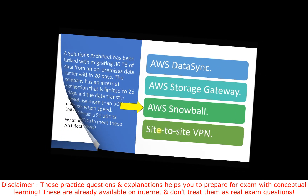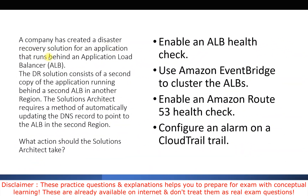The third question: a company has created a disaster recovery solution for an application running behind an Application Load Balancer. The DR solution consists of a second copy of the application running behind a second ALB in another region. The solutions architect requires a method to automatically update the DNS record to point to the ALB in the second region. The options are: enable an ALB health check, use Amazon EventBridge to cluster the ALBs, enable an Amazon Route 53 health check, or configure an alarm on a CloudTrail trail.